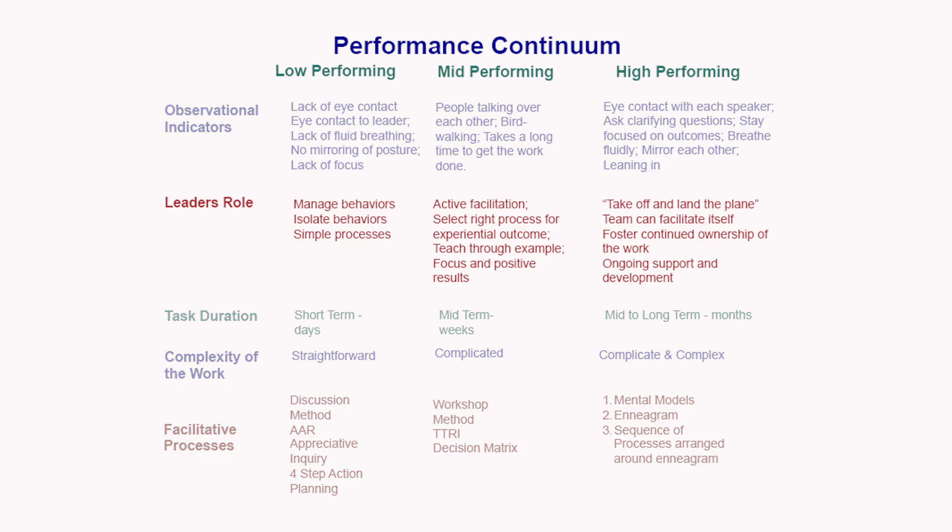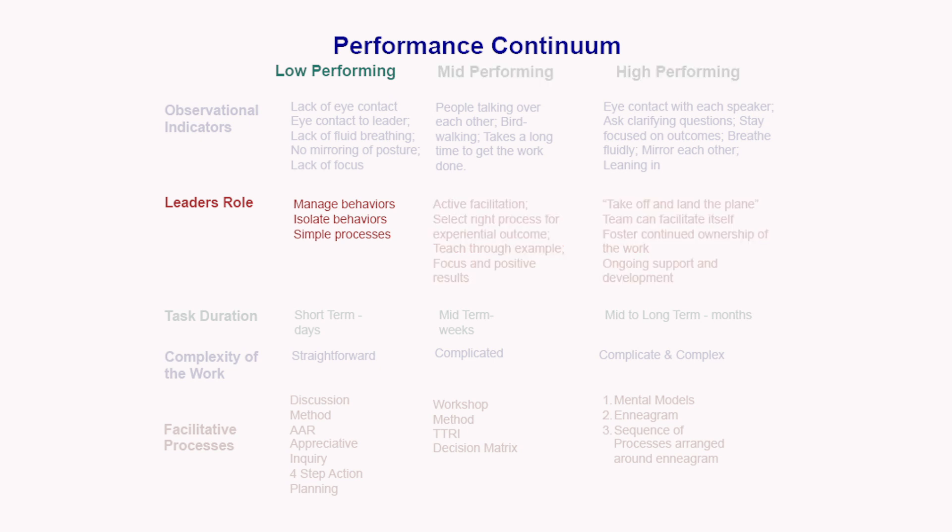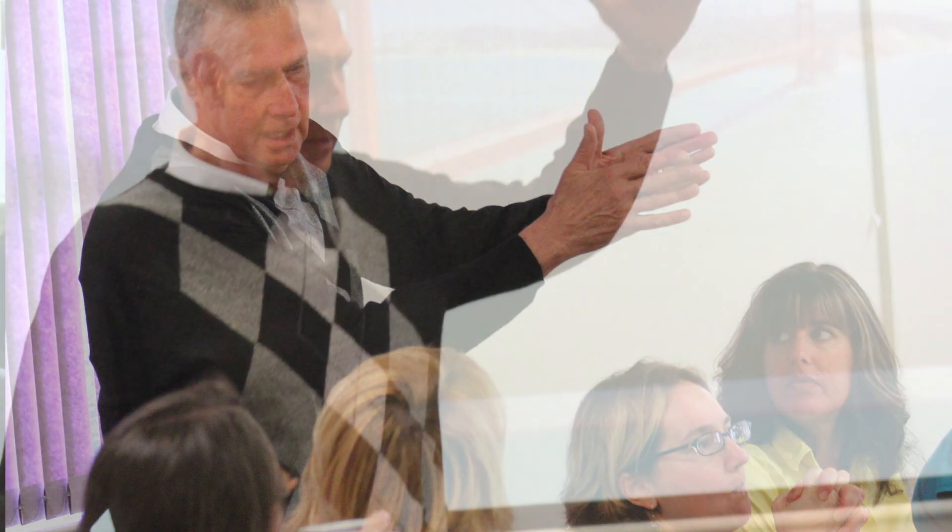Once a leader has determined the level of performance, they need to show up differently. With a low performing team, a leader needs to be very active in managing the dynamic — such as a dominant personality. The goal is to prevent that person from talking too much, capture their point, and focus attention on others. In more extreme cases, you move from managing to isolating that behavior, essentially removing that person from participating for a while.